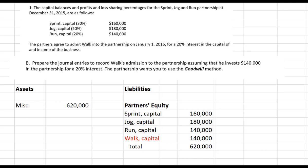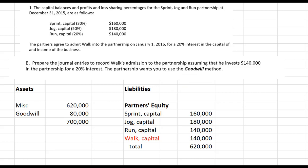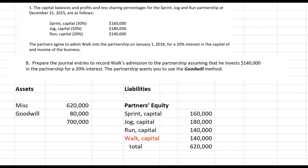Assets are currently $620,000, short of $700,000 by $80,000. This is the goodwill method — we add $80,000 of goodwill to bring assets up to $700,000. But now partners' equity accounts only total $620,000, so the $80,000 must be added to partners' equity accounts. The question is: whose accounts get increased? We assume goodwill was created by the existing partners, so we allocate $80,000 to them according to their profit and loss sharing ratios — Sprint gets 30%, Jog gets 50%, and Run gets 20%.